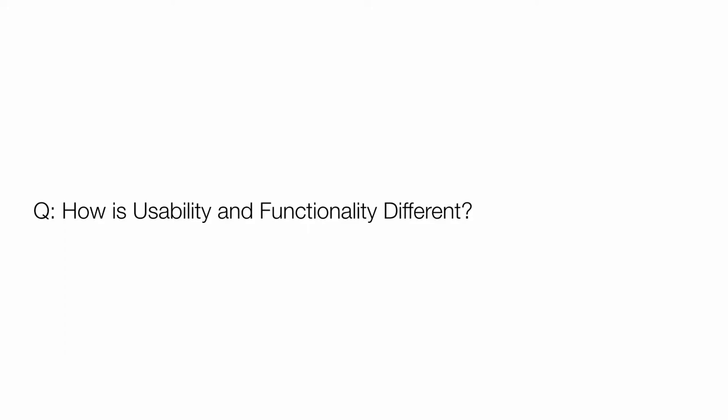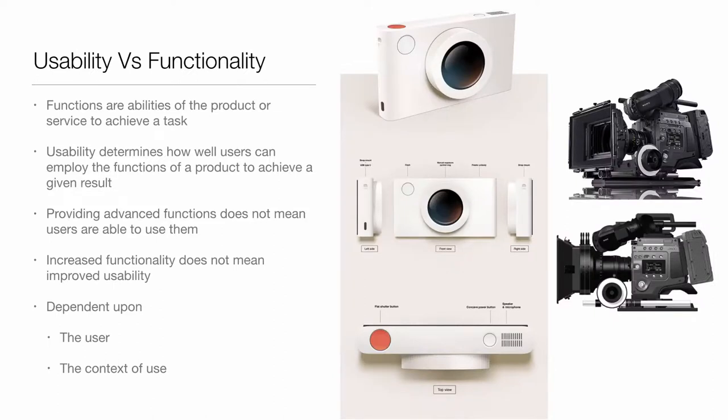Functions are the abilities of a product or service to achieve a task. A camera on the right has lots of functions, but actually all you need is a small red button — press it and take a picture or take a video. Just because you have more functions doesn't mean it is better. Sometimes more functions confuses the person. Usability determines how well you can employ the functions of a product to achieve the results. It's unlikely the average consumer will use a very complex camera to its full potential.